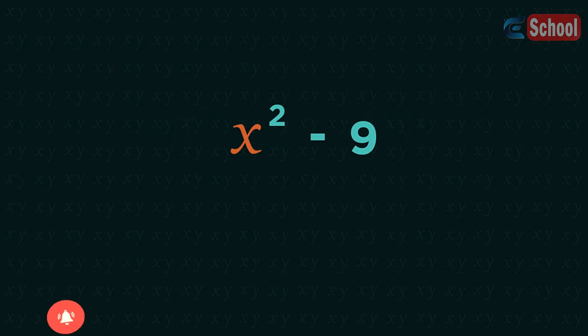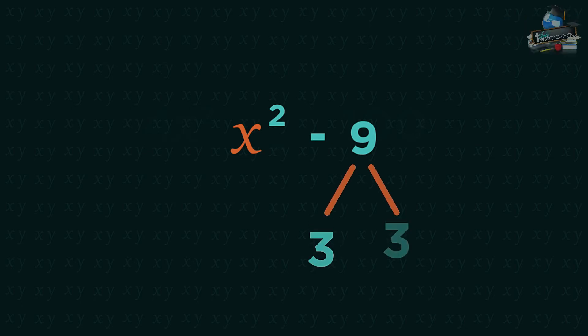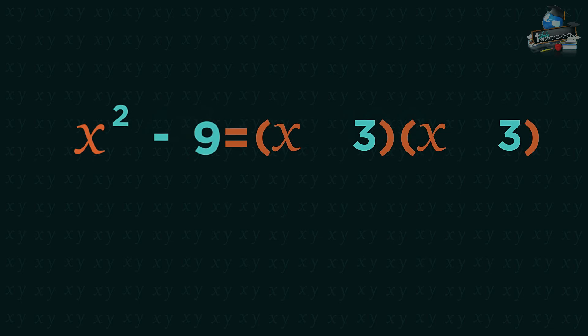Both the x squared and the nine are square numbers. These are really simple to factorize. The square root of nine is three, so both of our brackets are threes.